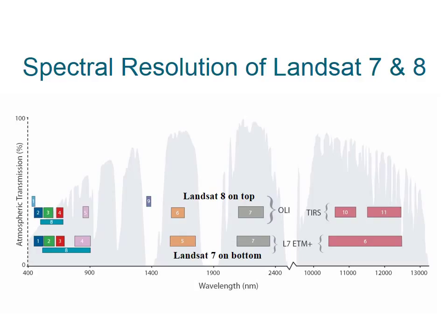This chart shows the differences in spectral resolution between Landsat 7, shown on the bottom, and Landsat 8, shown on the top. You'll notice that Landsat 8 has three additional bands. Band 1 of Landsat 8 was added to enable investigations of coastal waters. Band 9 of Landsat 8 was added to detect cirrus clouds within the atmosphere.